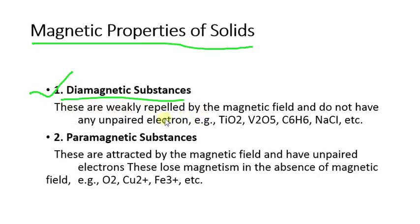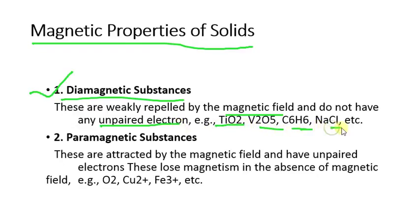Diamagnetic substances are those which are weakly repelled by a magnetic field and do not have any unpaired electrons. Examples you have to remember: TiO₂, V₂O₅, C₆H₆ (benzene), NaCl (sodium chloride), etc.